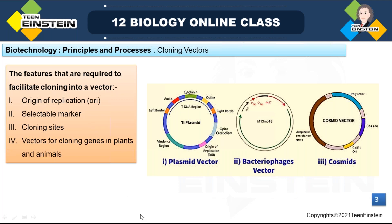We need a selectable marker. Antibiotic resistant genes are mostly used as selectable markers. For example, ampicillin and tetracycline resistant genes are used as selectable markers. Selectable marker means it helps in the selection of recombinants. Then cloning site — there should be a perfect cloning site where the restriction enzyme makes a cut, sticky ends are made, and the foreign DNA is inserted.